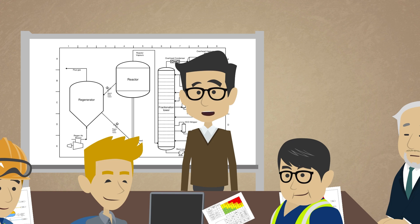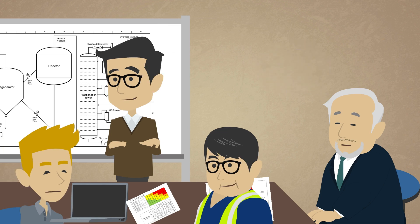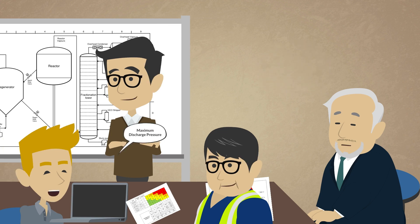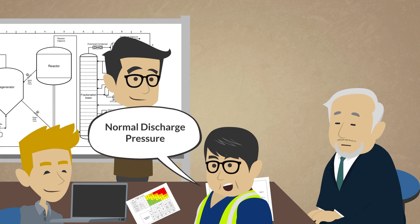I think we have most of what we need to get started on the reactor and regenerator. I would like to save some time by getting the process parameters for the fractionator ahead of time. I'll grab the pump operating curve so we can check the maximum discharge pressure of the pumps. I'll check with the control room to see what the normal discharge pressures are for those pumps.